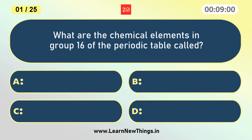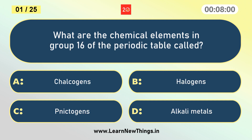What are the chemical elements in group 16 of the periodic table called? Chalcogens.